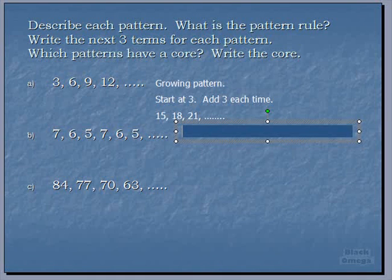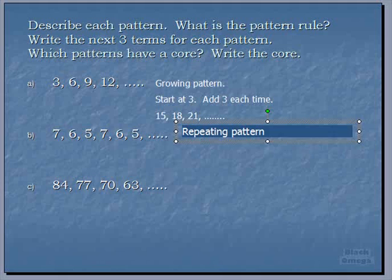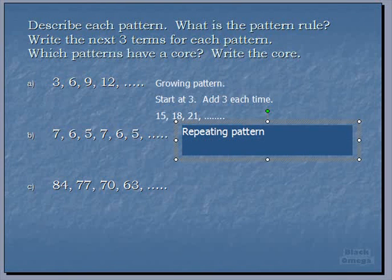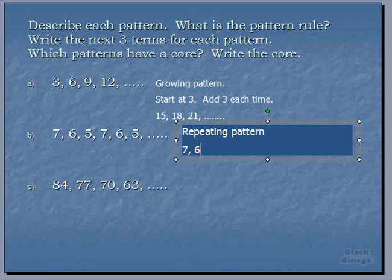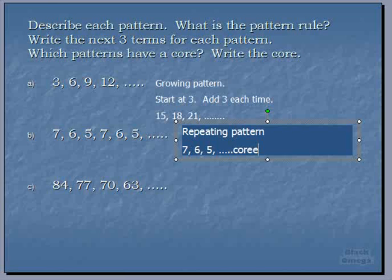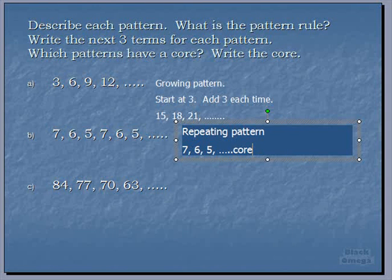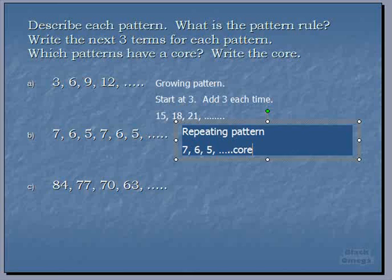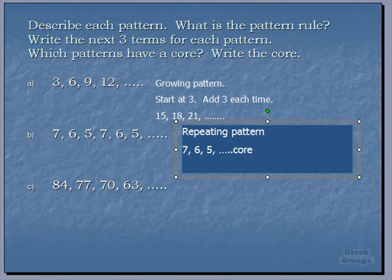That's right. We do have a repeating pattern. And how do we know that? What do we see that makes it a repeating pattern? 7, 6, 5, 7, 6, 5. So our first three terms, 7, 6, 5, are what we call our core because that's what repeats itself over and over again. That's the smallest part of the pattern that repeats itself.